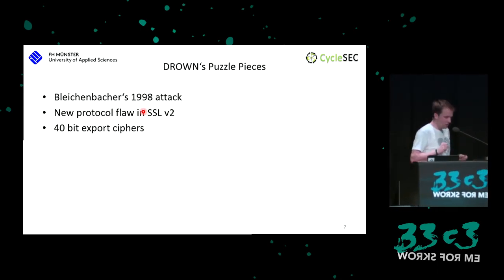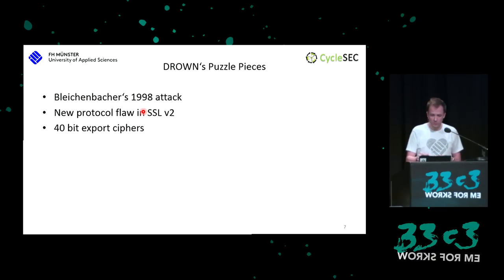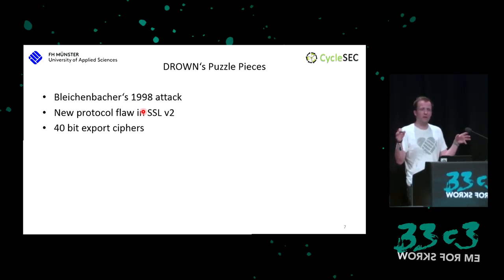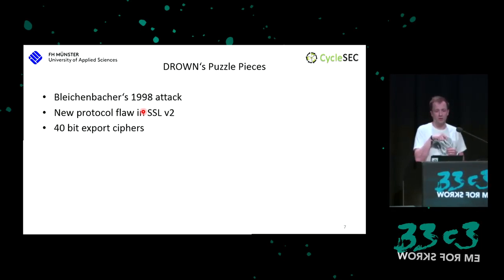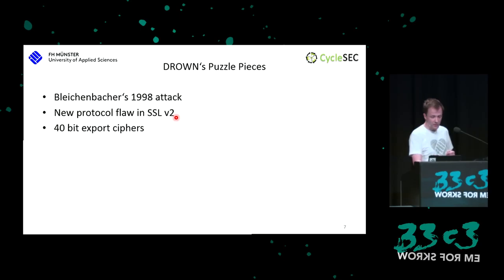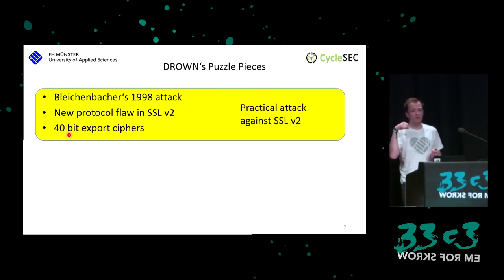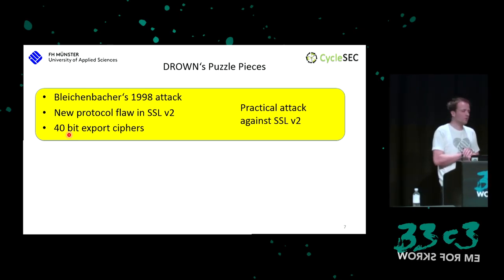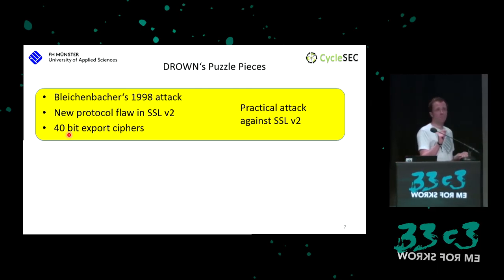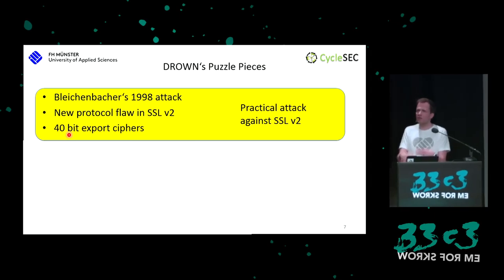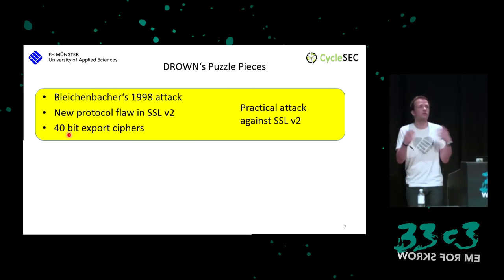There are several puzzle pieces. First, I'll briefly cover Bleichenbacher's attack — for full details see my 31C3 talk. Second, I'll show a new protocol flaw in SSL version 2. Third, I need to explain the 40-bit export ciphers. Combining these three gives a practical attack against SSL v2 — which is not relevant by itself since no clients still negotiate SSL v2, but servers that support it generally are still out there.